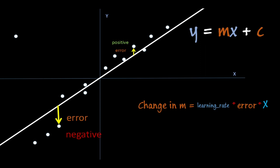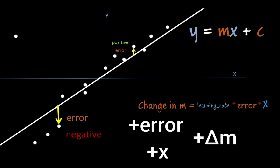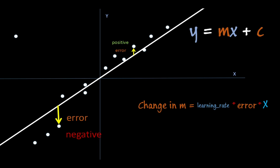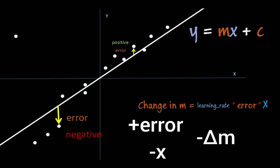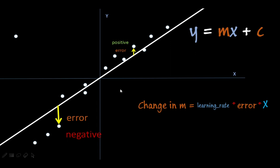If the error is positive and X is positive, then change in M will be positive — meaning M increases. If the error is positive and X is negative, then change in M will make M decrease, so that the line will reach the point better.